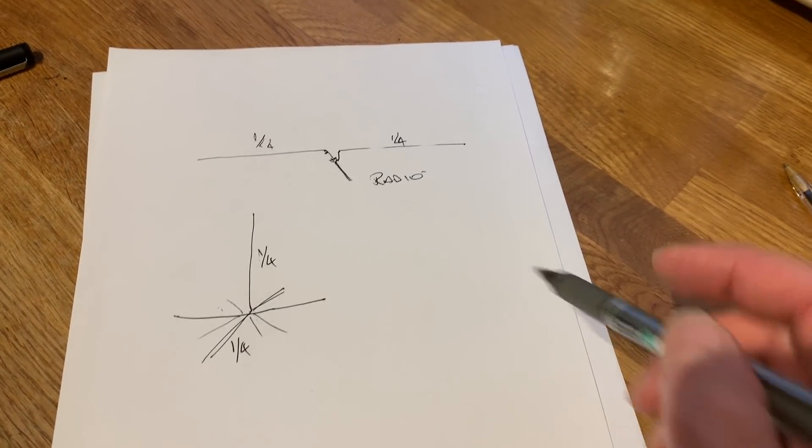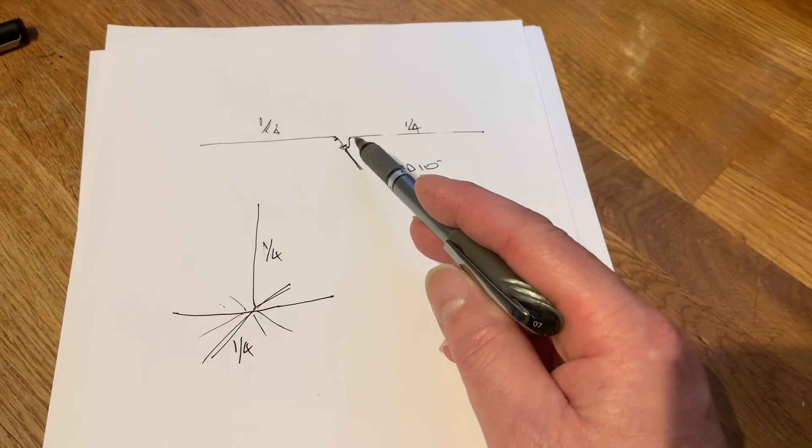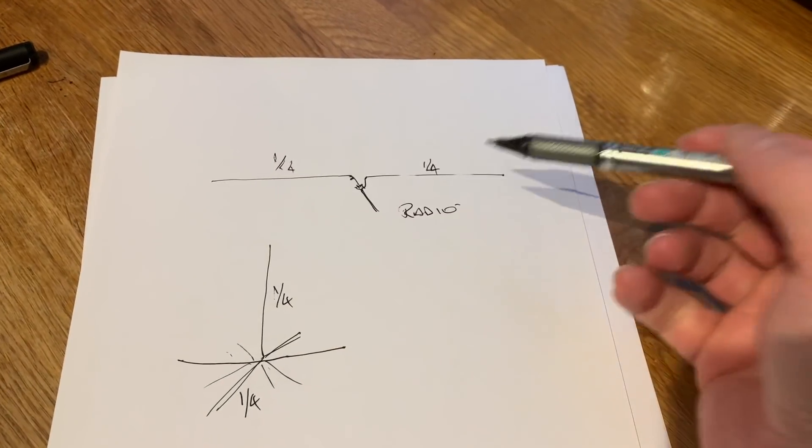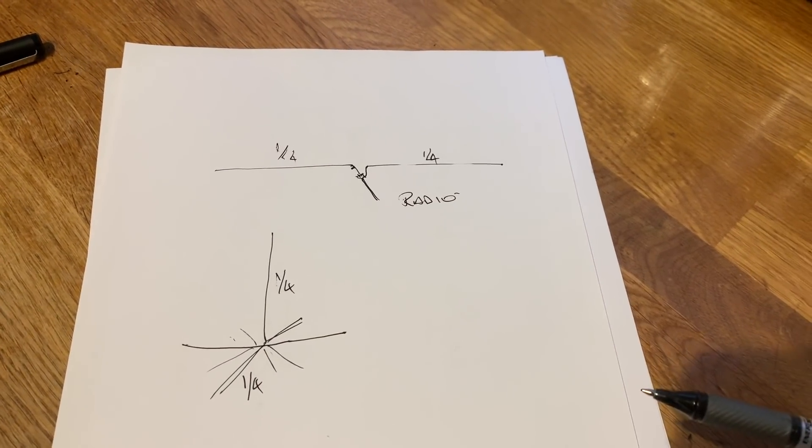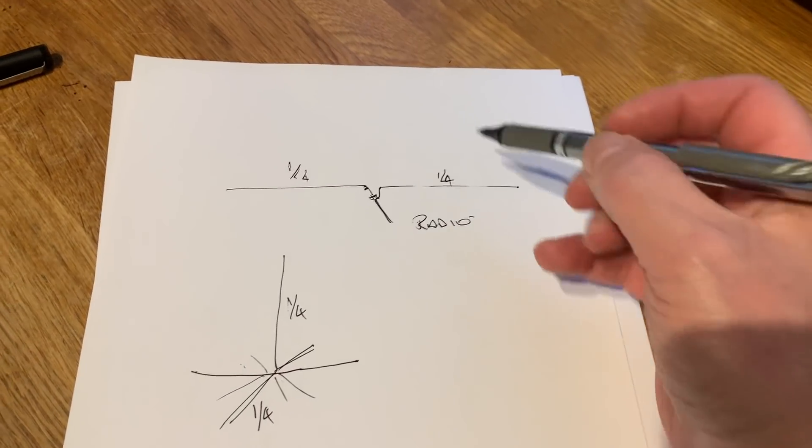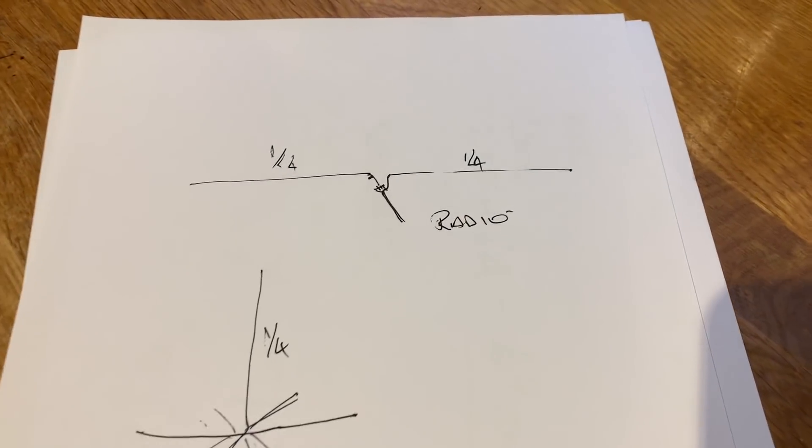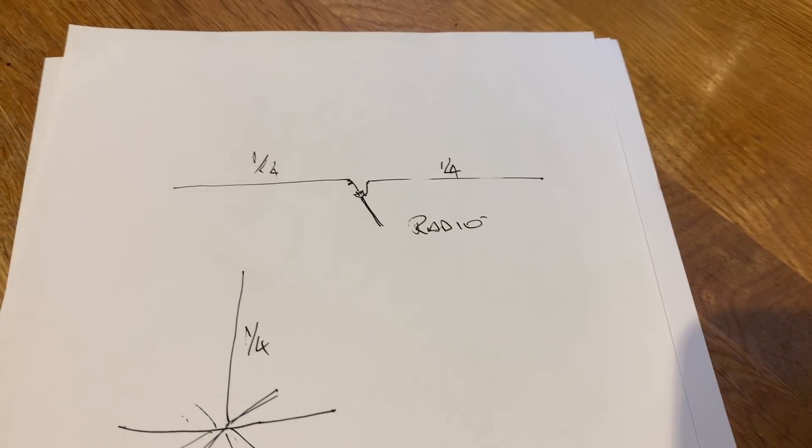Now, if we were to make this one a half wave dipole, which is a quarter wave on each side for the two meter band, it will also work perfectly well on the 70 centimeter band.